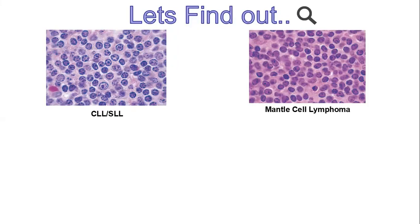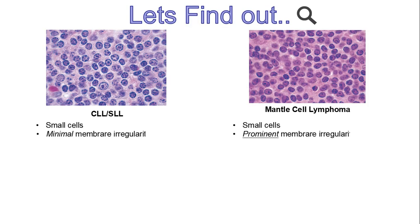The one on the left is CLL/SLL, while the one on the right is mantle cell lymphoma. As we can see, the differences are very subtle. Both are small cell lymphomas, and if you look at their nuclear membranes, there is the difference. The nuclear membranes in CLL/SLL are very regular with minimal irregularities, while in mantle cell lymphoma the membrane irregularities become quite prominent. And then they are very irregular if we look at the cells from follicular lymphoma.